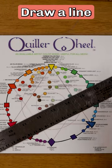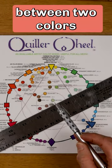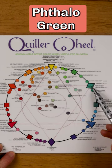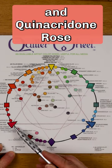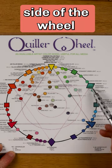Here's how it works. Draw a line through the center of the circle between two colors on the edge of the wheel. Phthalo green and quinacridone rose are on the opposite side of the wheel.